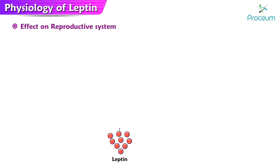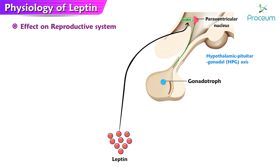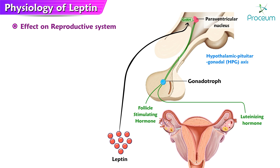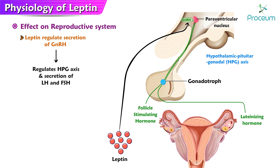Effect of leptin on the reproductive system. Leptin has a significant impact on the reproductive system and plays a key role in regulating the function of the hypothalamic-pituitary-gonadal (HPG) axis, which is responsible for the regulation of gonadal function and the secretion of reproductive hormones. In addition, leptin has been shown to regulate the menstrual cycle by affecting the secretion of follicle-stimulating hormone (FSH) and luteinizing hormone (LH), which are essential for the development and ovulation of the follicle.